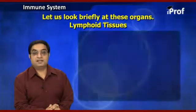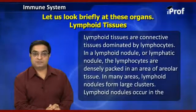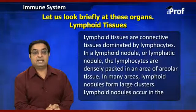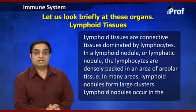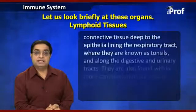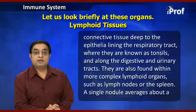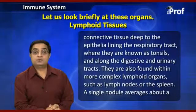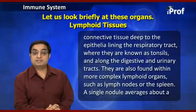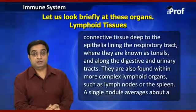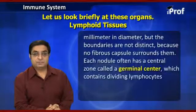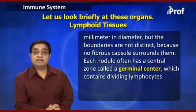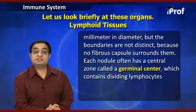Lymphoid tissues are connective tissues dominated by lymphocytes. In a lymphoid nodule, the lymphocytes are densely packed in an area of areolar tissue, and in many areas lymphoid nodules form large clusters. Lymphoid nodules occur in the connective tissue deep in the epithelial lining of the respiratory tract, along the digestive tract and urinary tract, and within more complex lymphoid organs such as lymph nodes and spleen. A single nodule averages about one millimeter in diameter with no surrounding fibrous capsule, and each nodule often has a central zone called the germinal center, which contains dividing lymphocytes.